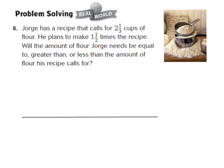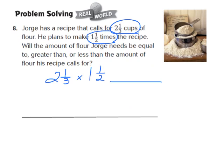Let's take a look at question number 8, another real-world problem-solving question. Number 8 says: George has a recipe that calls for 2 and 1 third cups of flour. He plans to make 1 and 1 half times the recipe. Will the amount of flour George needs be equal to, greater than, or less than the amount his recipe calls for? We know George's recipe calls for 2 and 1 third cups of flour, and he's multiplying it by 1 and 1 half.